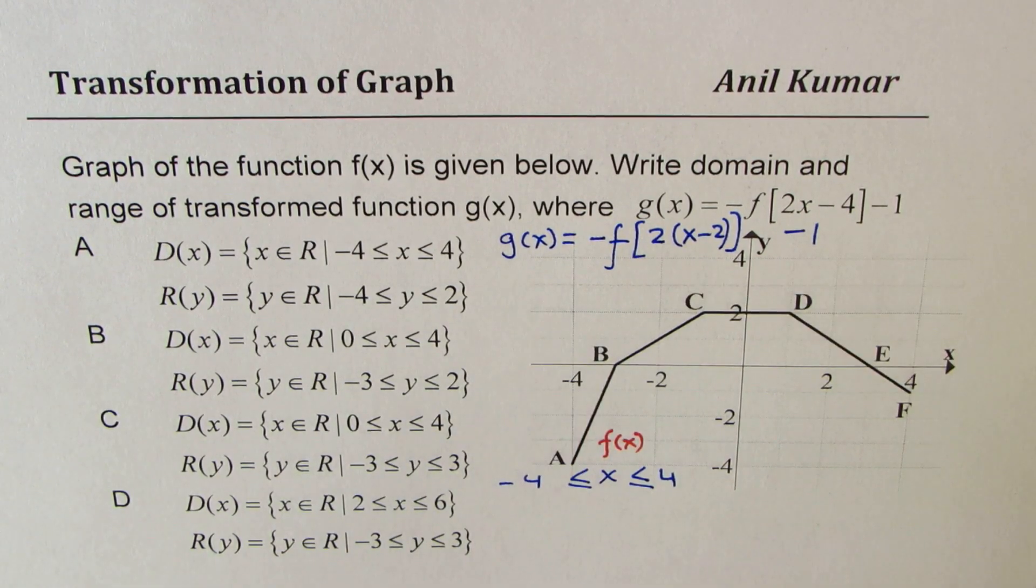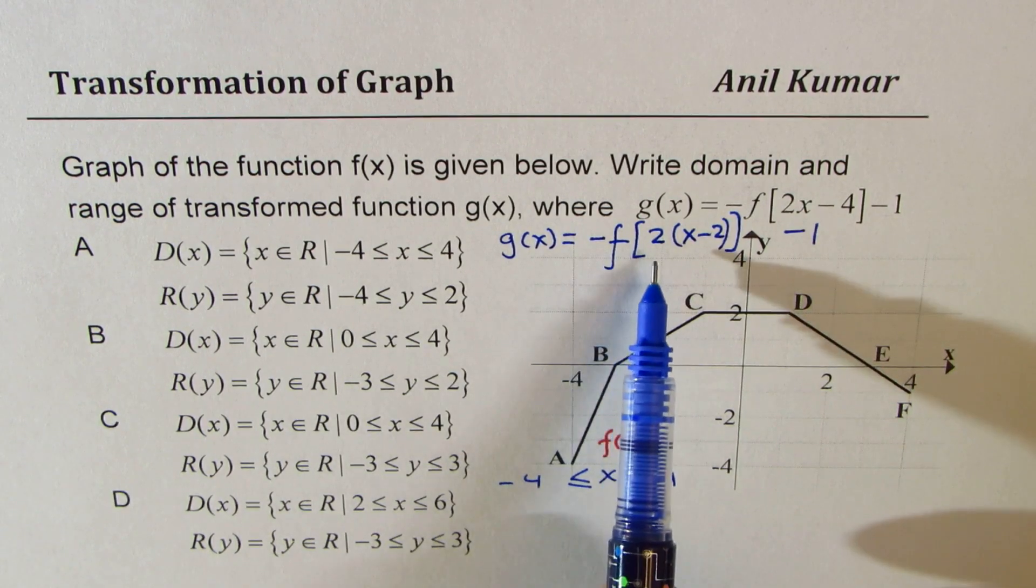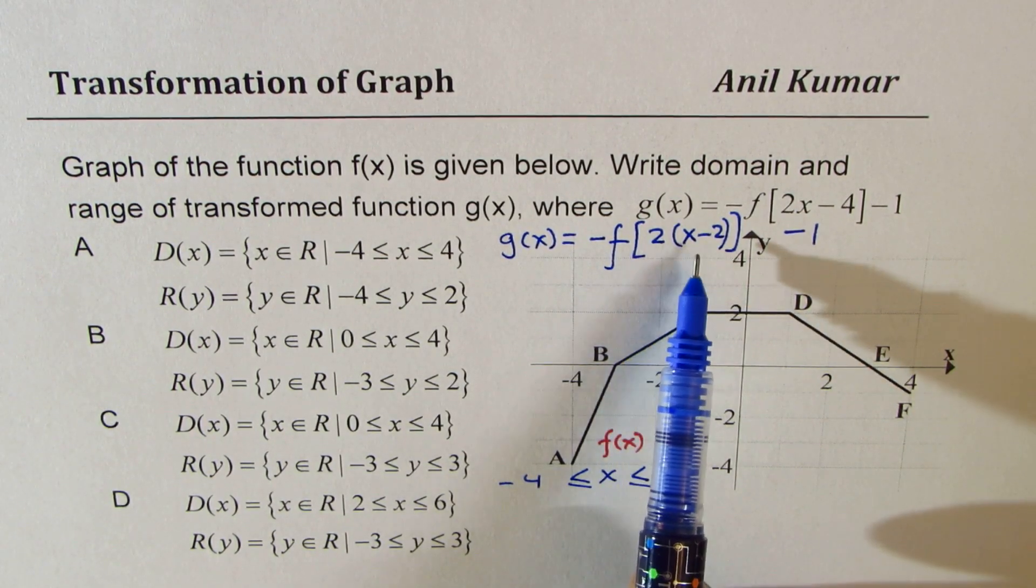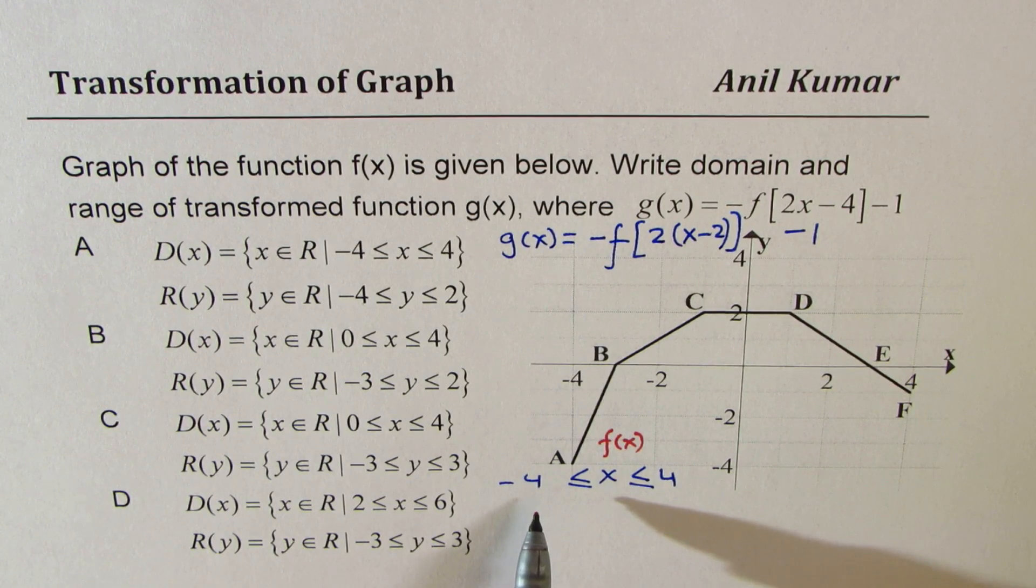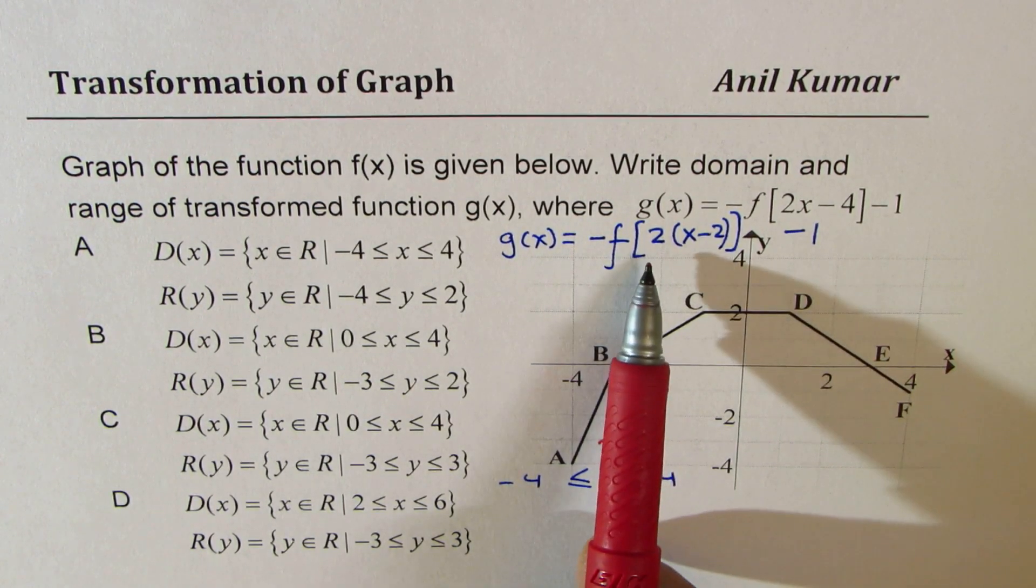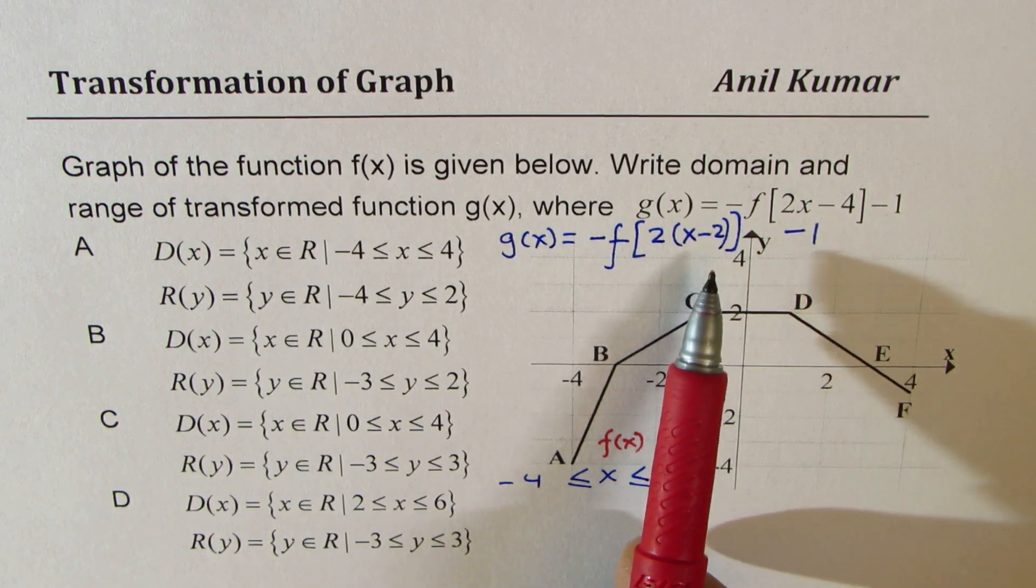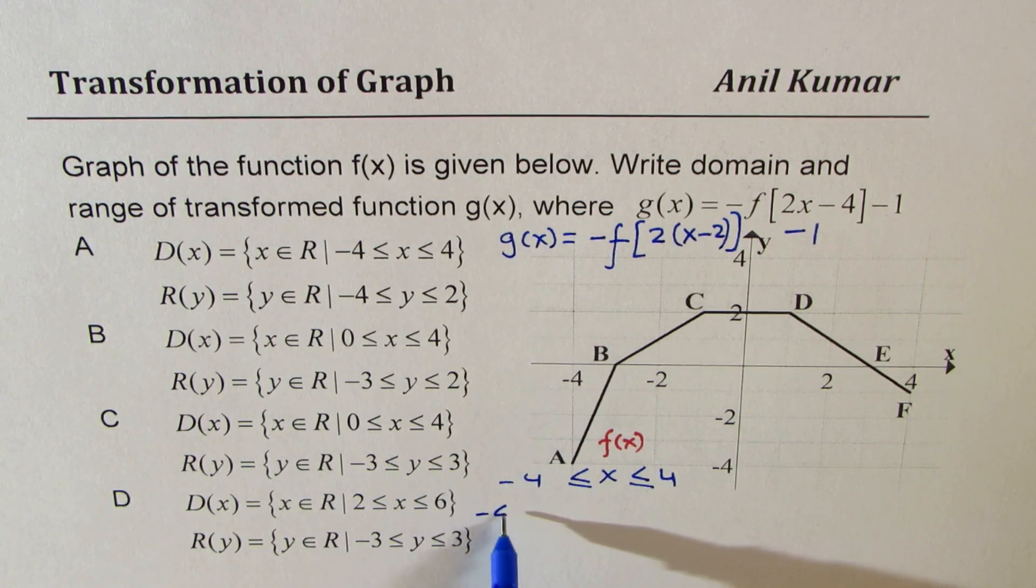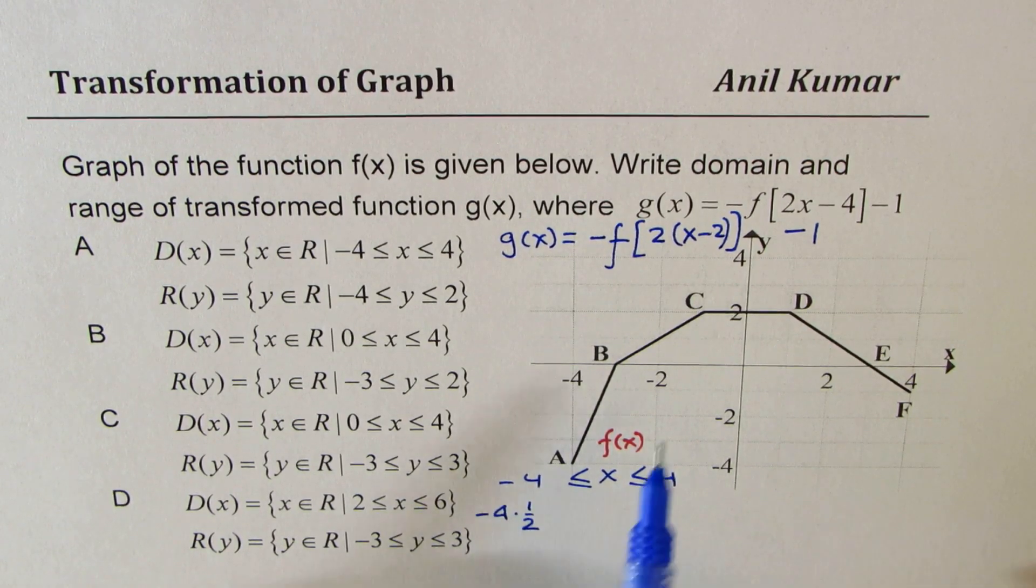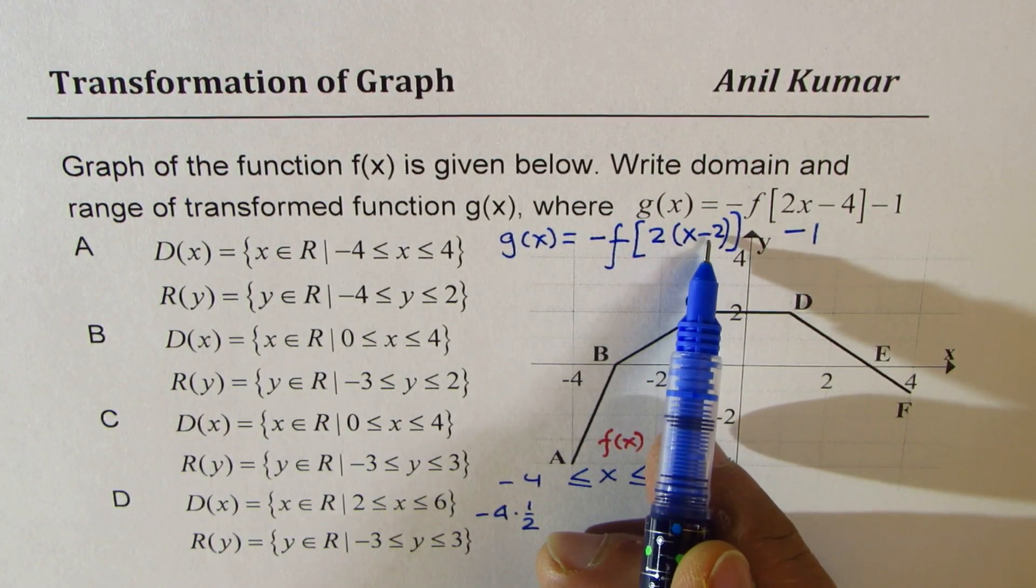What happens in g of x? The value of x, we have to half it and then move 2 units right. That means, we'll actually multiply both these terms by half and then add 2. So we could rewrite this as minus 4 times half and then we are going to add 2.